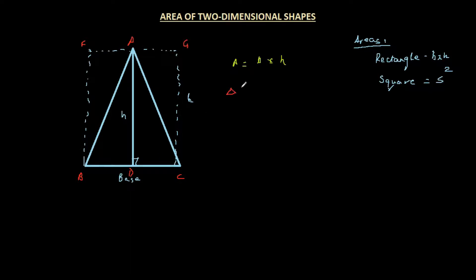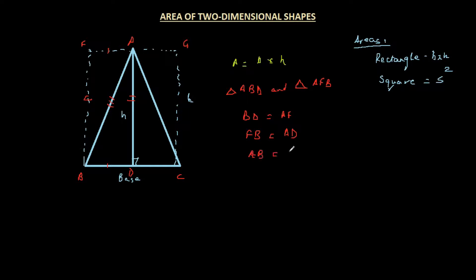We are looking at two triangles: triangle ABD and triangle AFB. In rectangle AFBD, opposite sides are equal, so BD equals AF and FB equals AD. AB is the common side. Since all three sides of each triangle are equal to each other, by the SSS congruency rule, triangle ABD is congruent to triangle BAF. Similarly, the two triangles on the other side are also congruent, so their areas are equal.